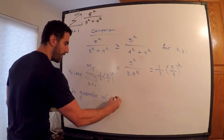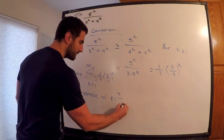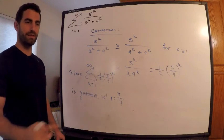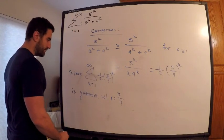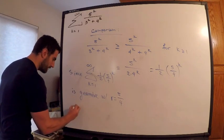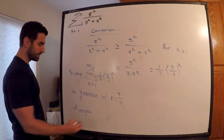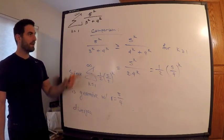If the common ratio exceeds one or is less than negative one, it diverges. This thing diverges. So since this geometric series diverges...